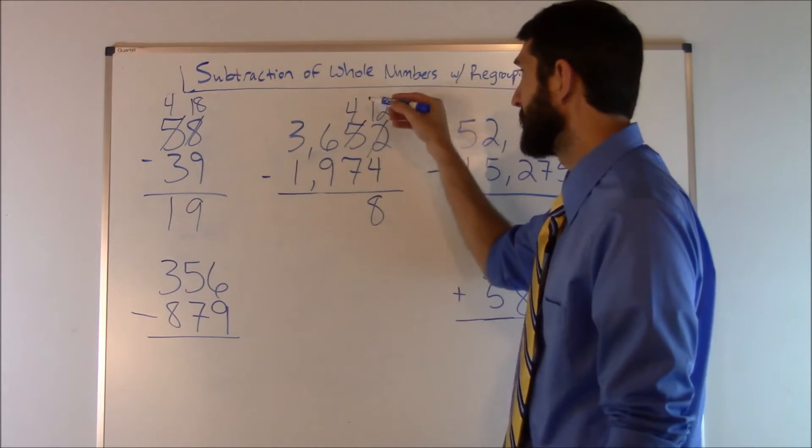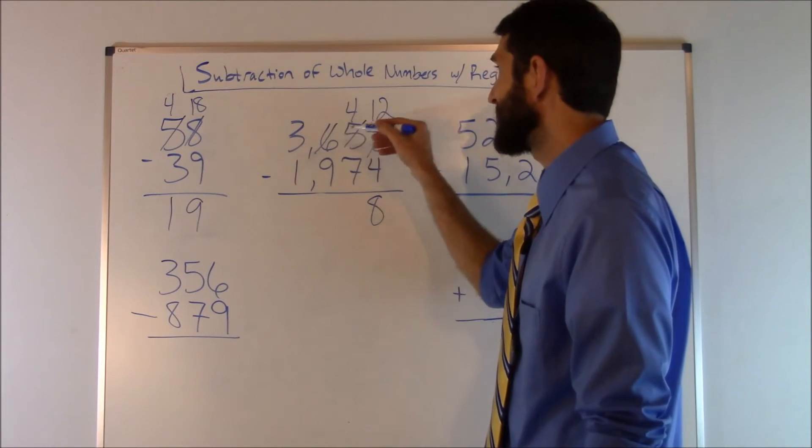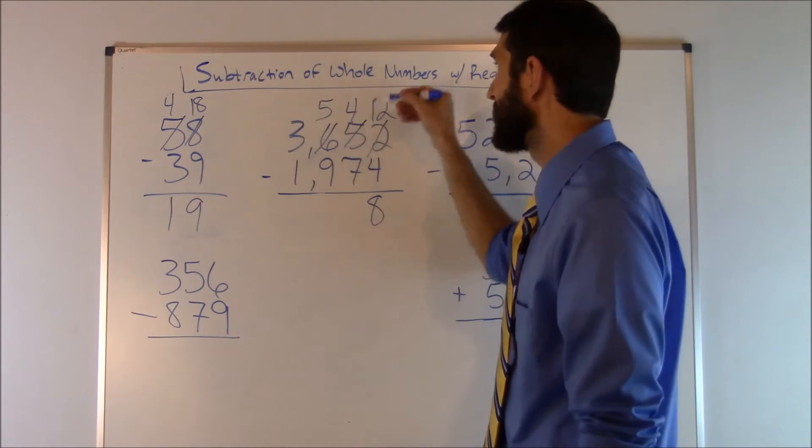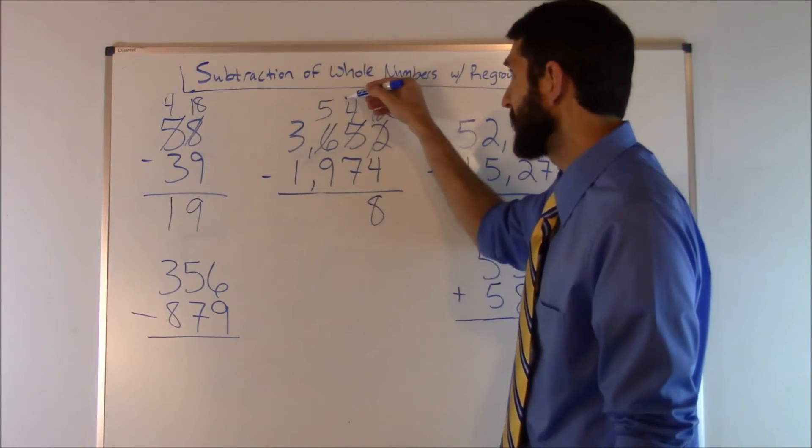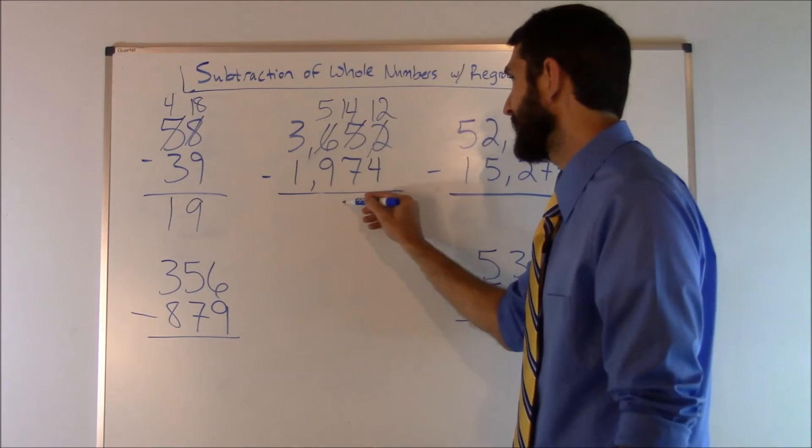We go to the next column: four minus seven. We can't do that, so we got to bum one off the neighbor again. Six minus one is going to become a five. We add ten back to this right here. That's going to make that 14. So 14 minus seven is going to give us a seven.